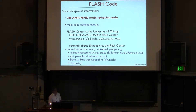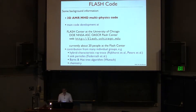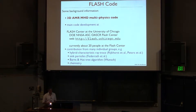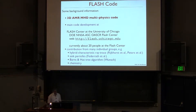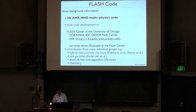Apart from these 20 people working at the Flash Center, a couple of contributions from outside were brought into the FLASH code, in particular extending the multi-physics purpose on ray tracing problems, radiation transfer, sink particles which we will learn about in the next few days, and also different algorithms for solving the Poisson equation or solving self-gravity problems. Chemistry has also been brought in from outside and is now part of the public version of the FLASH code.